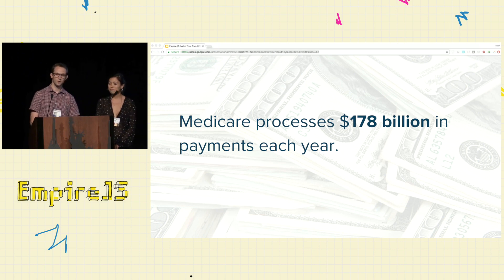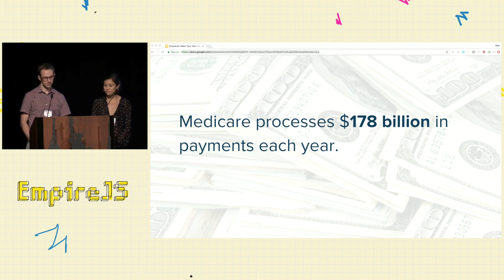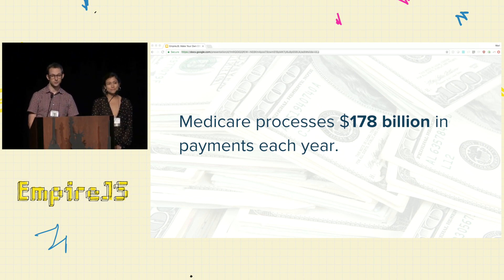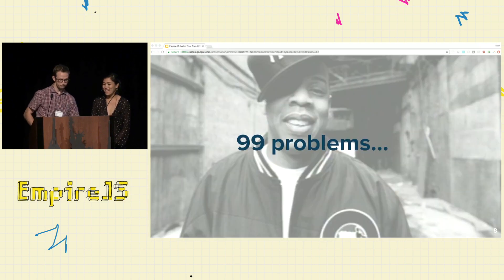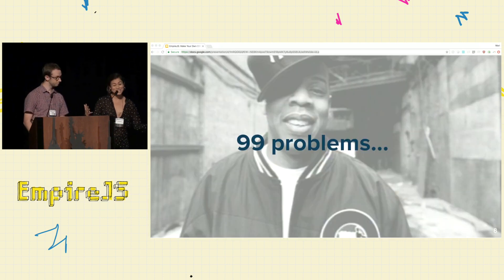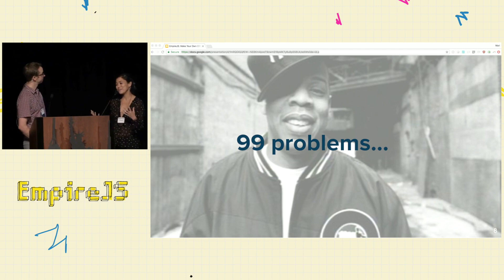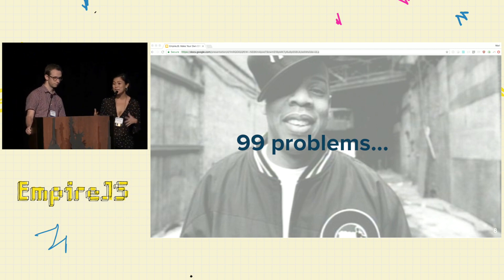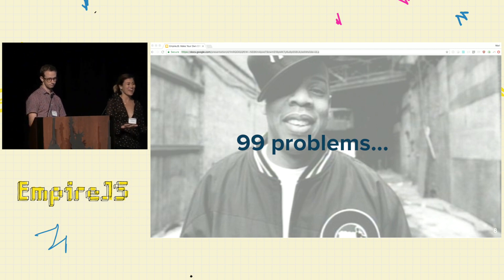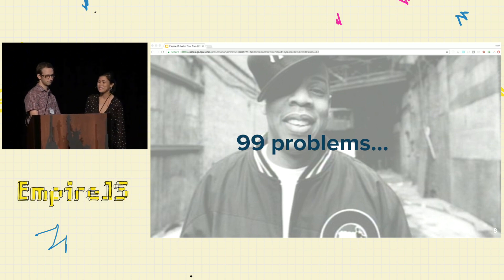At Nava, our work for the last two years has been to build a technical system that supports this change in financial incentives under QPP. It's awesome — we're working on something that has a really large impact, but there are also problems that arise working in the context of the U.S. government.